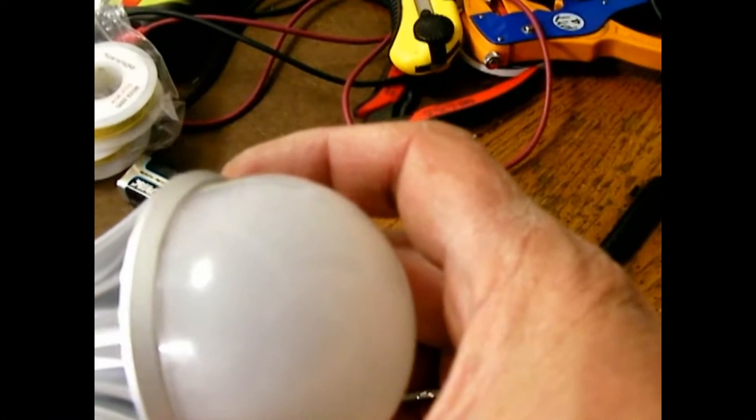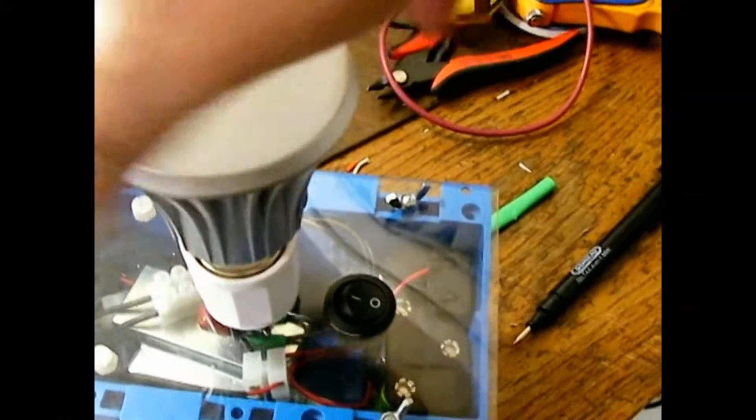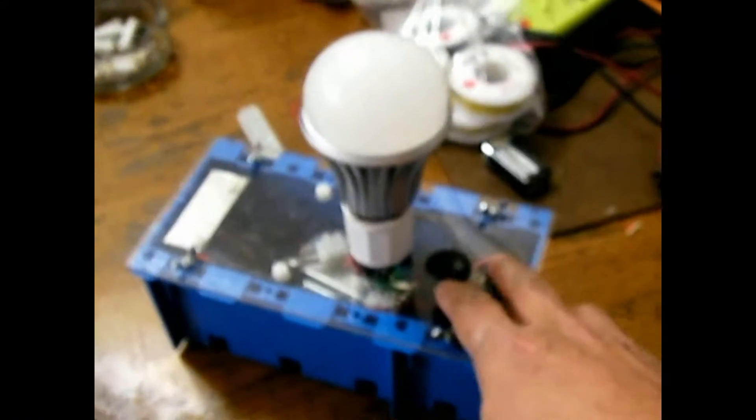This one is very very bright actually. Anyway, let me turn it on. All right, that's too bright. Let me turn off the light so you can see. That's really bright. Okay, enough of my kitchen.